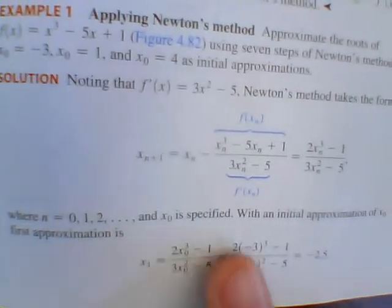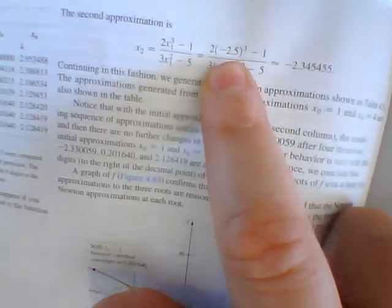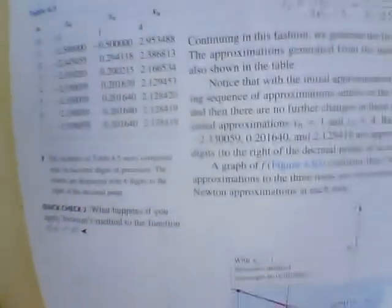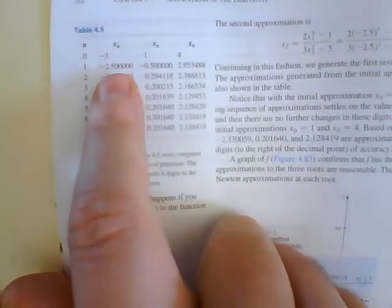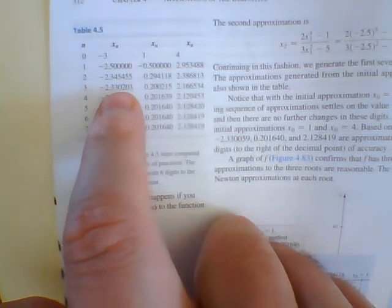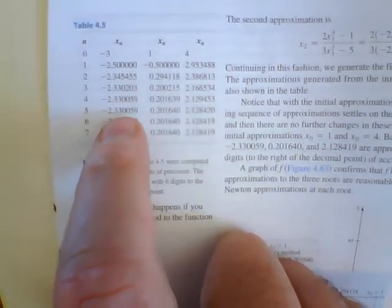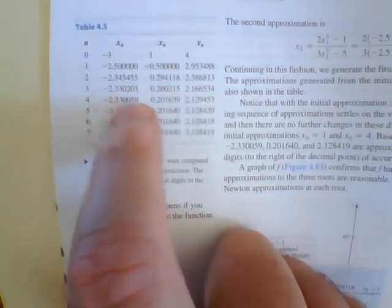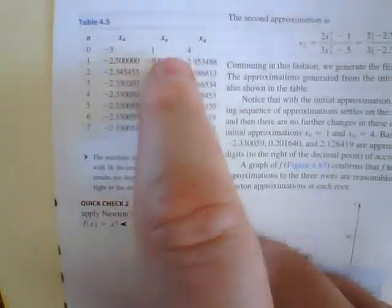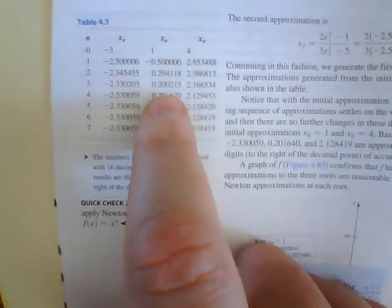Then what we do is we start plugging in a value. So we'll start plugging in that negative three. We see we get a negative 2.5. Then we'll come back and plug in the negative 2.5. We get this, then we'll come back. And what you see over here, they kind of have the table lined out for us, is that we plug in negative 2.5, we get negative 2.345. We plug this in, we get negative 2.33. We plug negative 2.3300. And we see that we get this approximation right here.